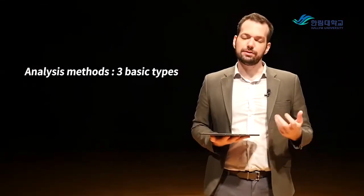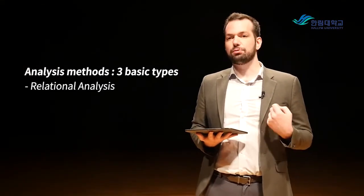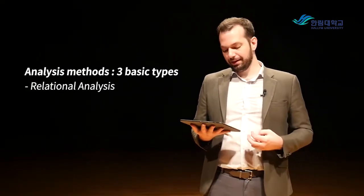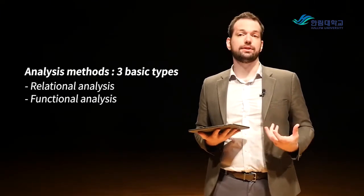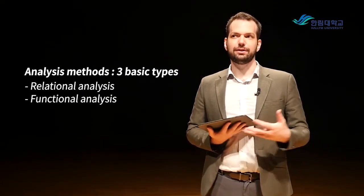There are basically three types of analysis methods, also true for traditional investigations. First is relational analysis — relating people, places, and things using link analysis to figure out how people are connected, how a person is connected to a phone number, what numbers that phone number called. This is a very powerful method because we all easily understand relations between people and objects, and it's easy to show a jury. Functional analysis looks at how a system or application works and how it was configured — used a lot for malware analysis to understand how a virus was working and what functions it performed.